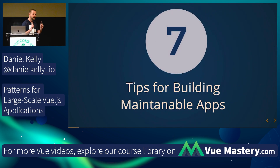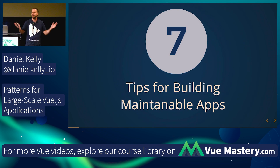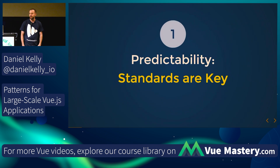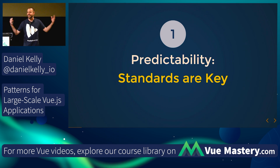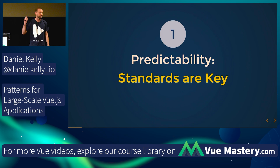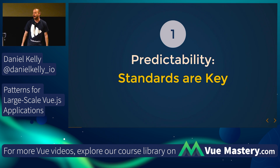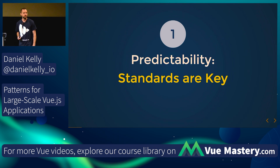I'm going to share with you seven tips for building these maintainable large-scale apps. Starting with tip number one. This one is not exciting, not flashy, not fancy, but it's true. The number one thing for a scalable app is: make it predictable.